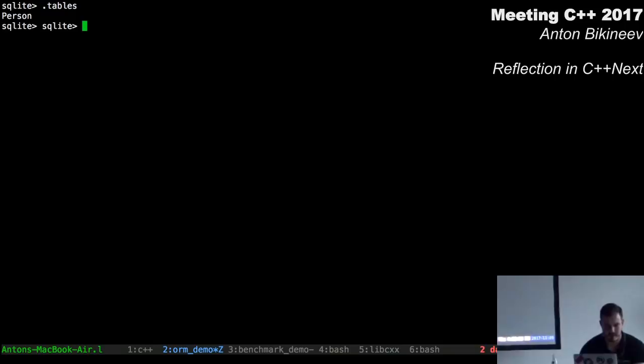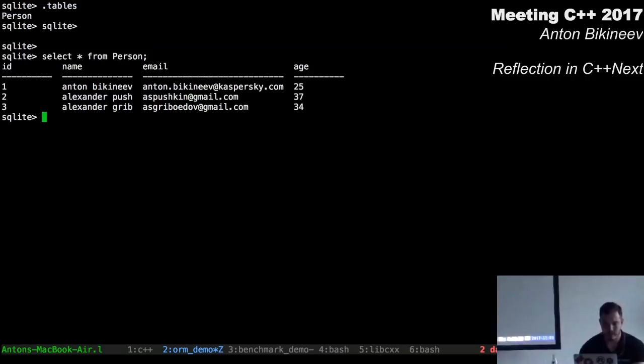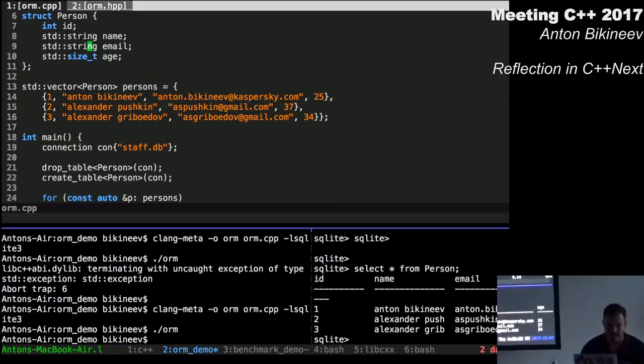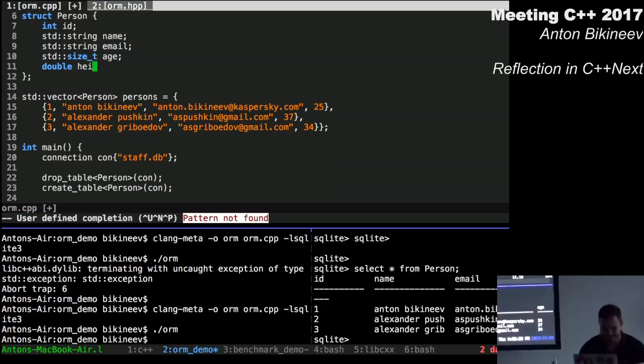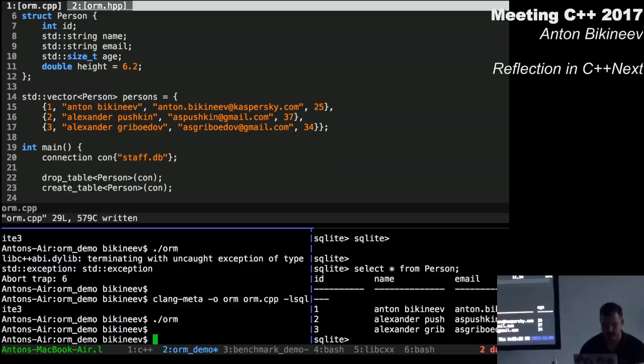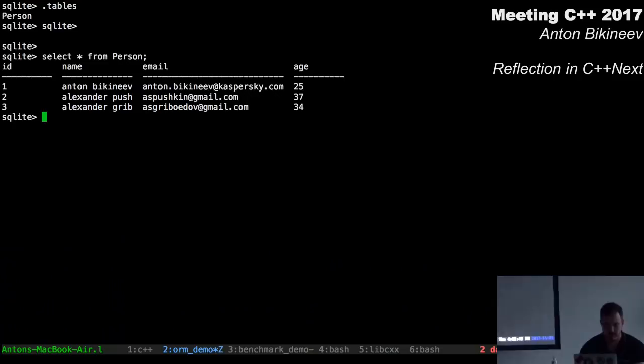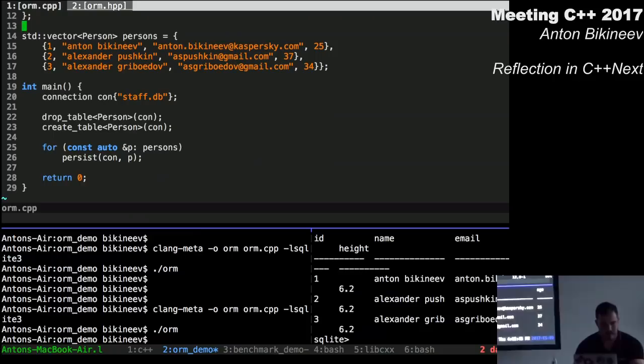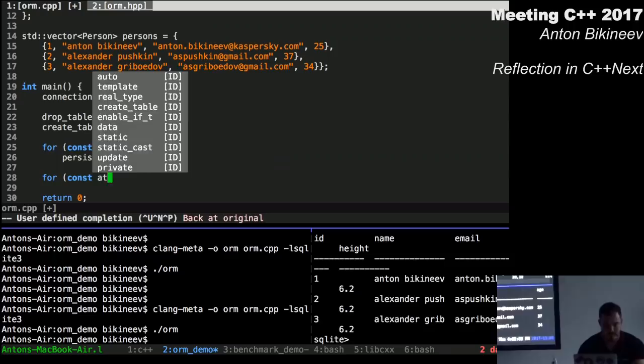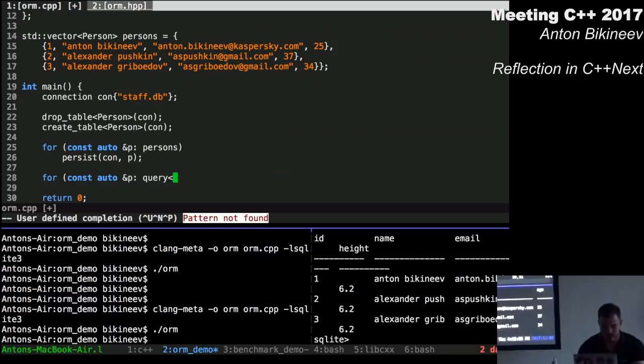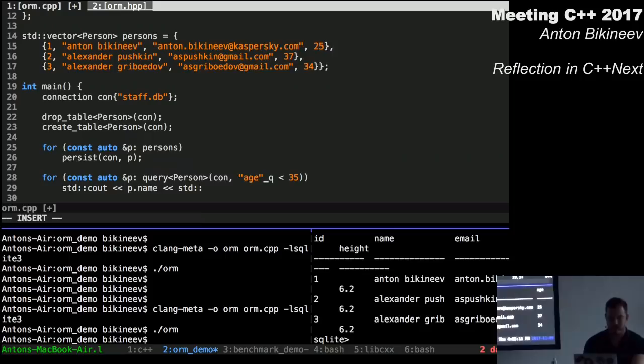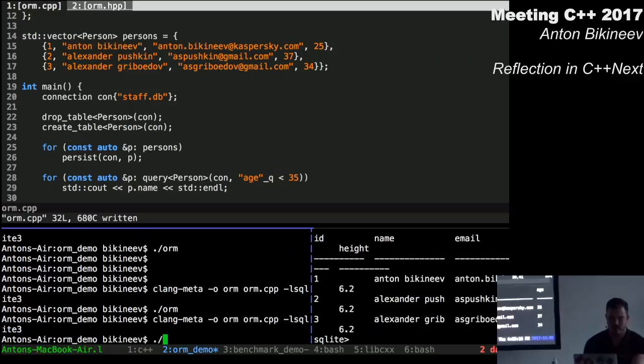Let's call the function persist on each element of the vector. Then compile it. It fails because we are trying to create the table that already exists. Let's drop it then programmatically. Compile. Run. Let's select everything from the table. Here we are. It works. And if we add one more column into this table, say height of type double with a default value.